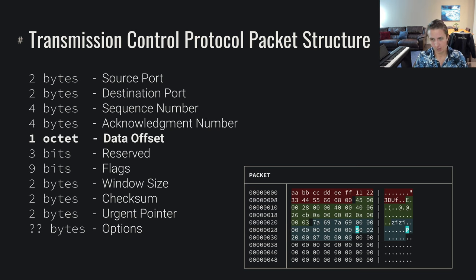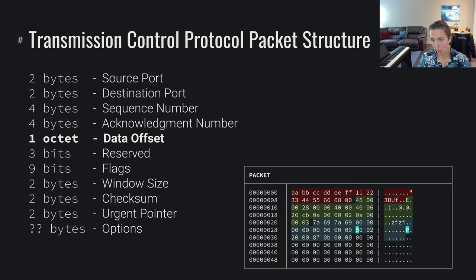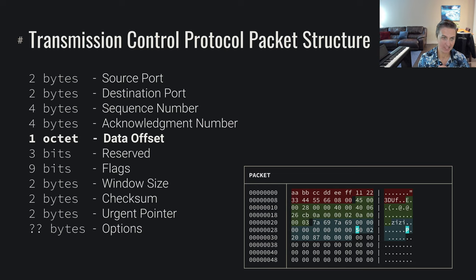We've also got this data offset. We're stacking all of these protocols on top of each other, and in this case the TCP portion of the packet is taking up 20 bytes. That is a variable length, because just as in IP, we can have optional data within this header. In this case we've got 5 times 4 equals 20 bytes of header data, and after that is when the data starts — that's the offset to the data within our TCP packet.